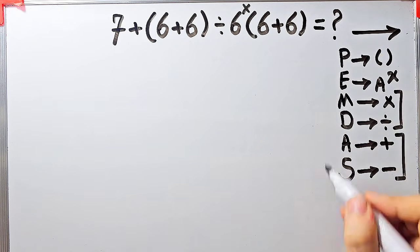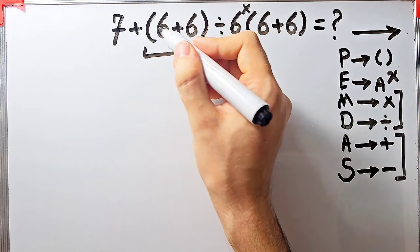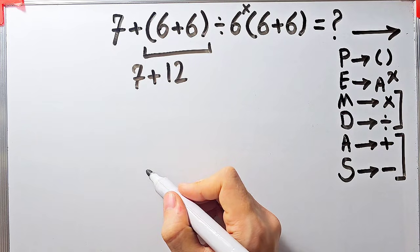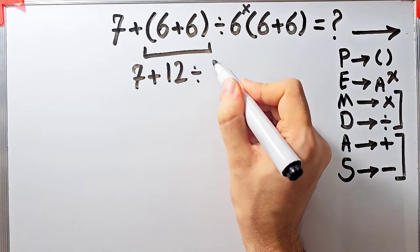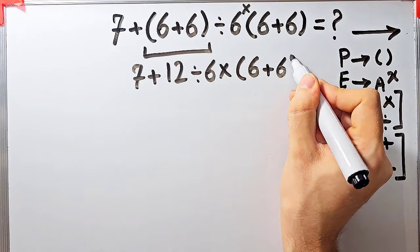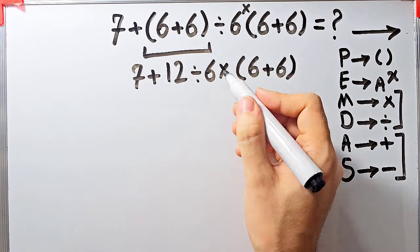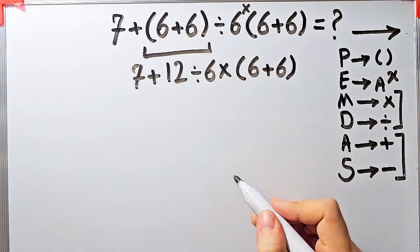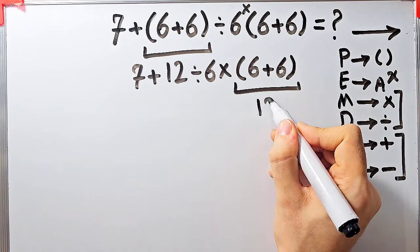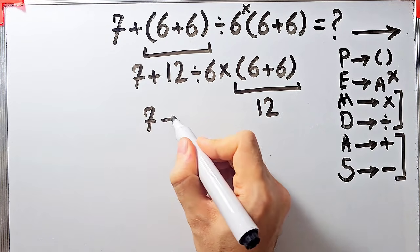According to the PEMDAS rule, first we simplify the parenthesis. Inside the first parenthesis we have 6 + 6, which equals 12. Now we have 7 plus 12, divided by 6, then times (6 + 6). Now we have addition, division, multiplication, and another parenthesis. We simplify the second parenthesis: 6 + 6 equals 12. Now the question is 7 plus 12 divided by 6, then times 12.